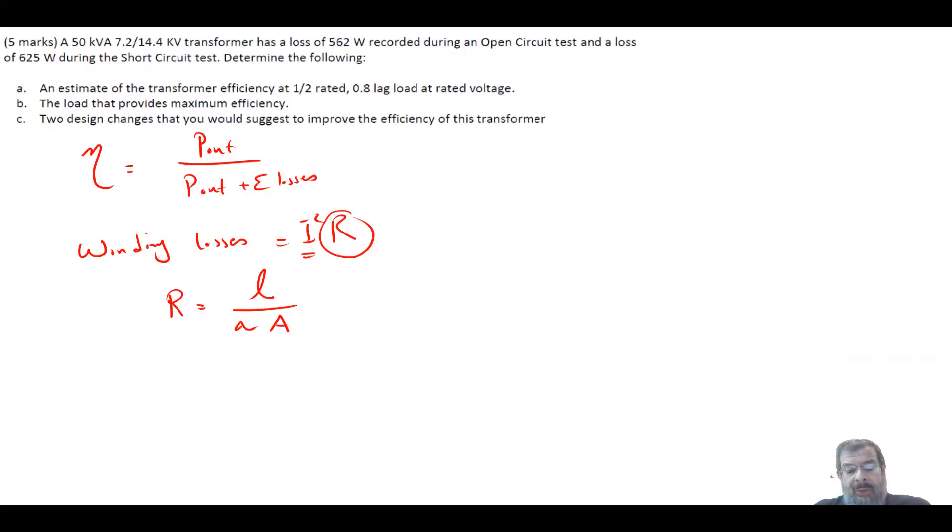And this R is equal to L over conductivity times A. So one way to change is the conductivity by using a material. We have either copper or aluminum. Obviously, copper has a better conductivity. So if you are using aluminum, use copper. This will reduce the R. Or, and this is more common, because most people use one material, either aluminum or copper, change the A. What is A? It's the cross-sectional area. So the conductor cross-sectional area A, increase this. So once you increase A, then R will be reduced. Then your winding loss will be reduced as well.